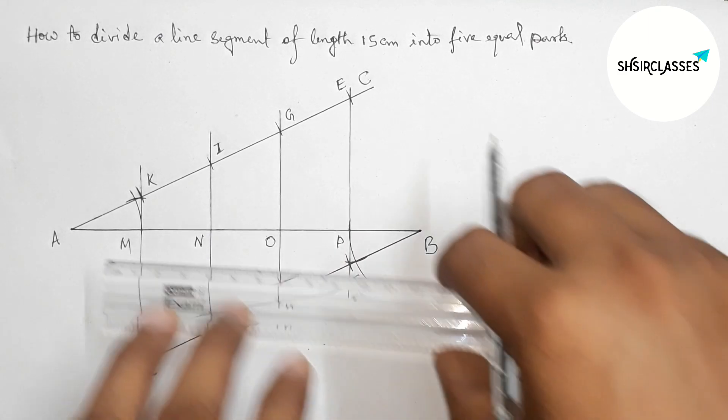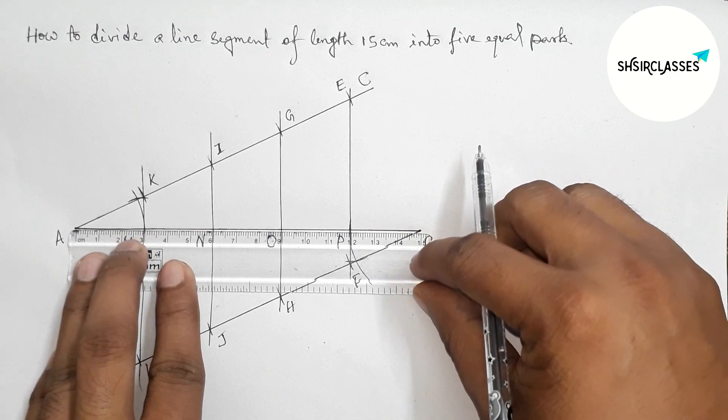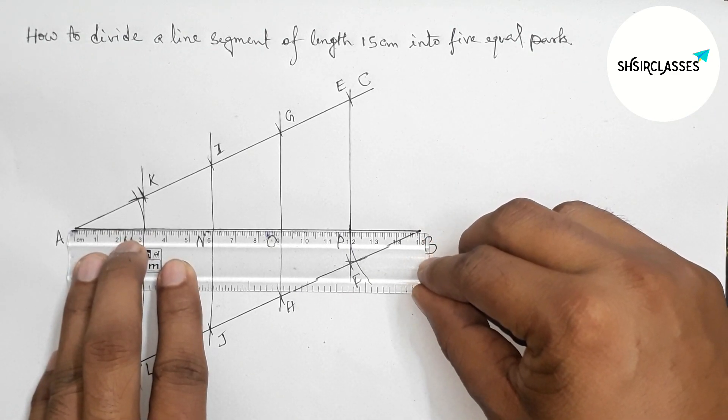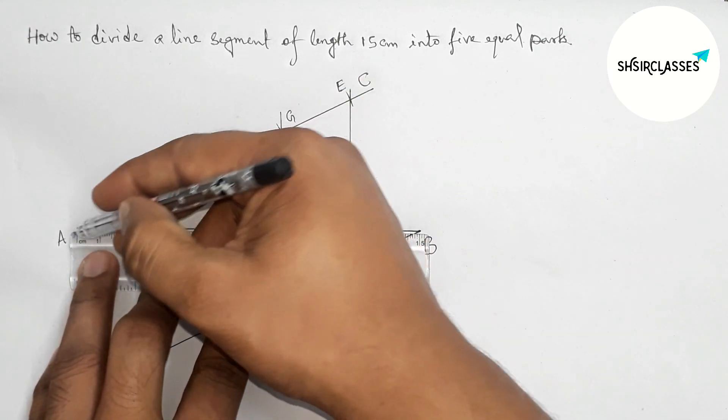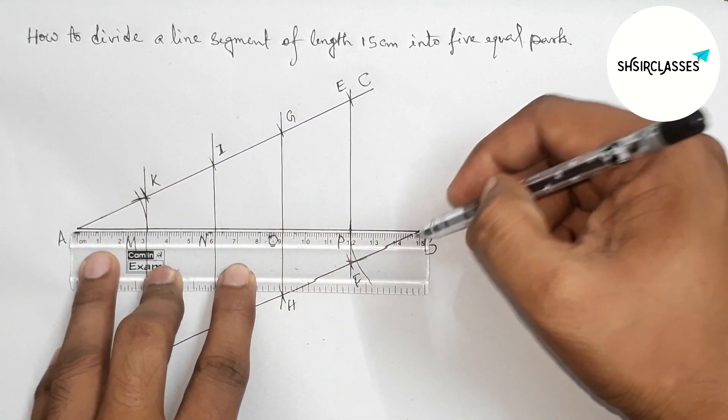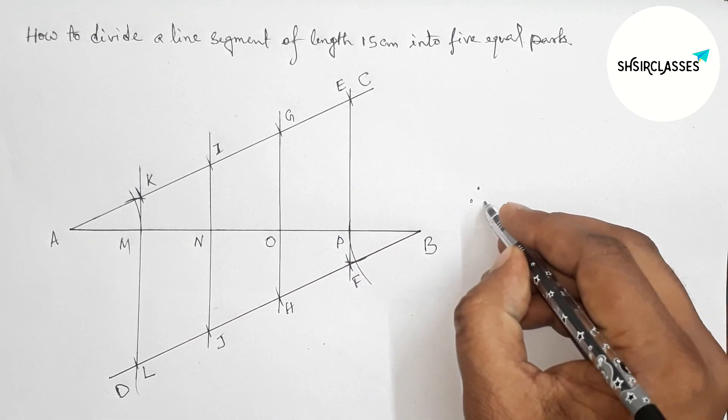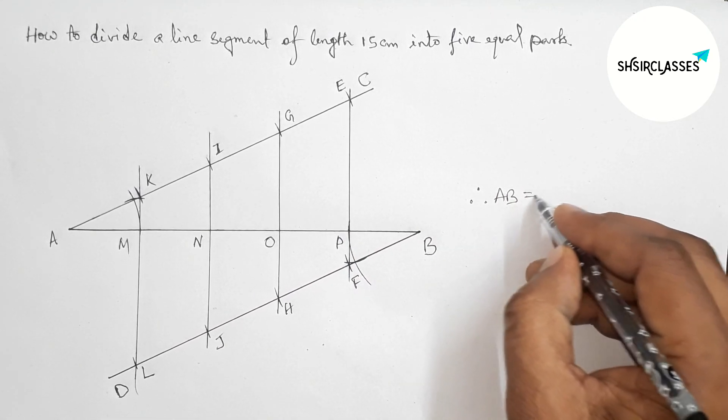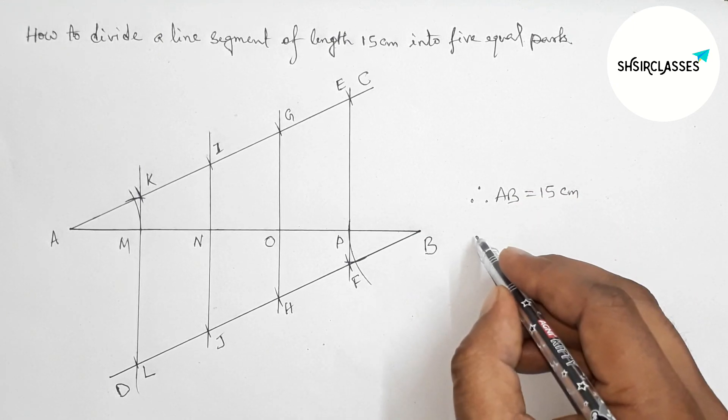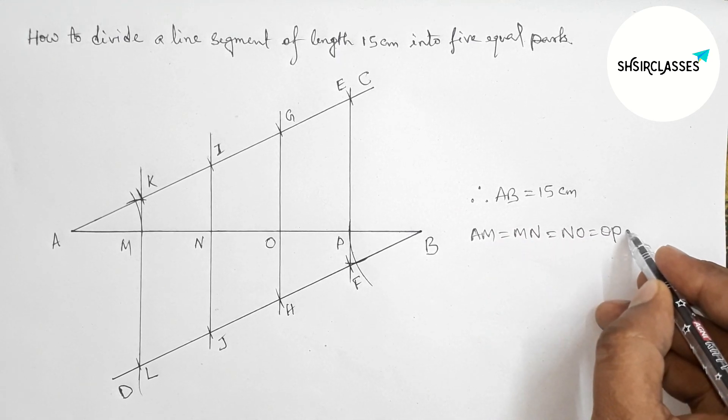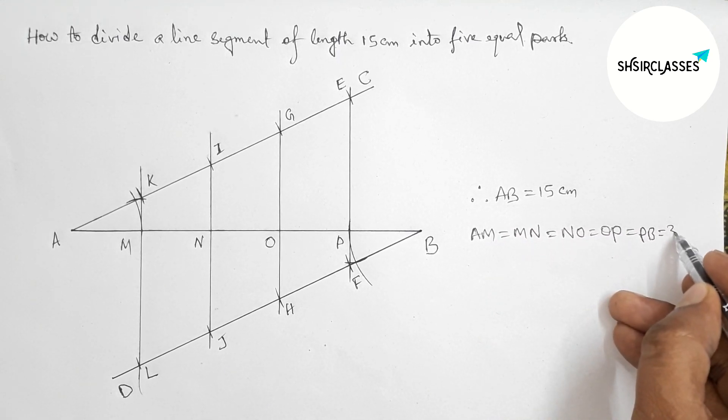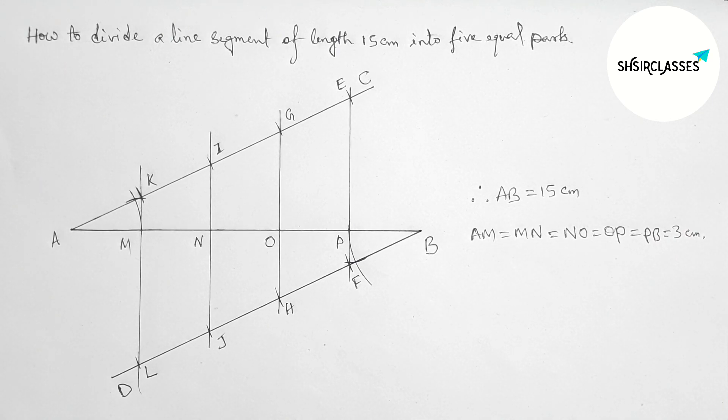Now I'm going to check whether it is perfect or not. You can see this is perfect. The length of each part: this is 3, 6, 9, 12, 15. Therefore, the length of line AB is 15 centimeters, and the length of each part is equal to 3 centimeters. That's all, thanks for watching. Please share it with your friends.